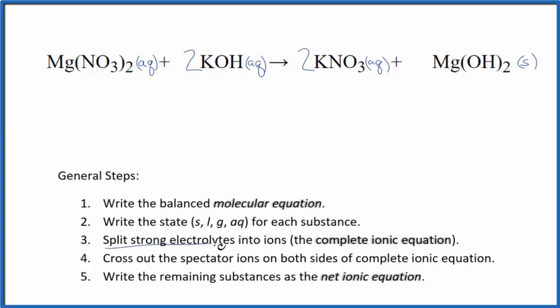Now we can split strong electrolytes into their ions—that'll be the complete ionic equation. We have Mg, which is in group two on the periodic table with a 2+ ionic charge. The nitrate ion is 1-. We have two of them.